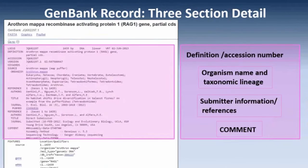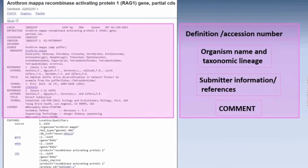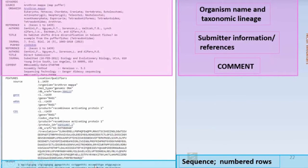The top part describes the study, the organism, the taxonomic information, the references, and it gives you the definition and the accession number. The bottom section, of which we have just a small part shown here at the bottom of the screen, is the actual sequence, whether it's DNA or RNA.